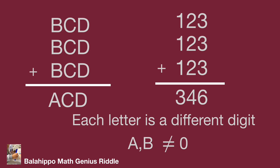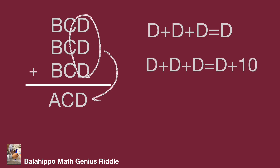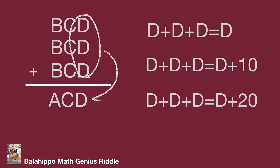Okay, let's find the answer. Look at the last digit D. Adding 3D must end in D, so we list several equations for easy understanding. First condition: D + D + D = D. Second condition: D + D + D = D + 10. Third condition: D + D + D = D + 20. From the first condition, 3D = D, so 2D = 0, giving D = 0.